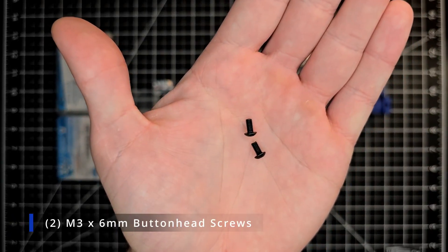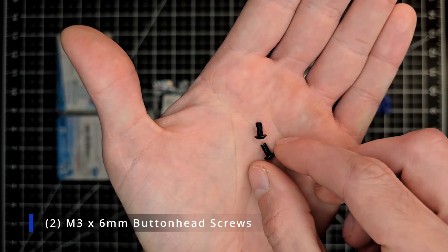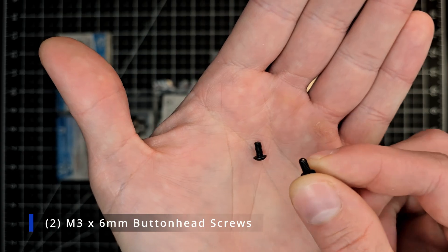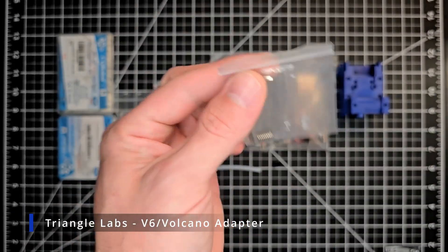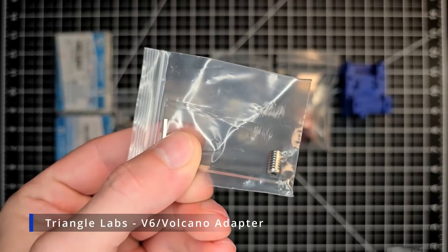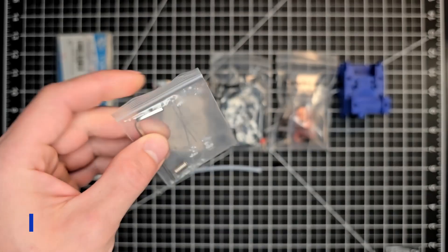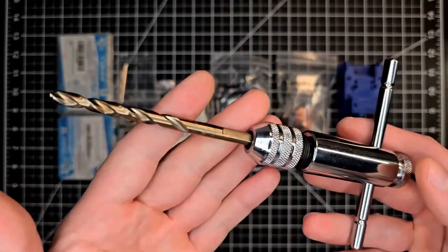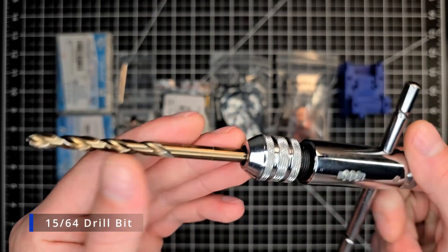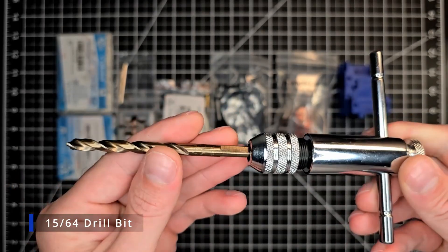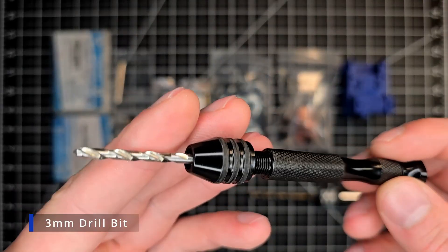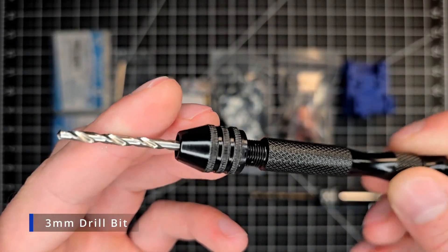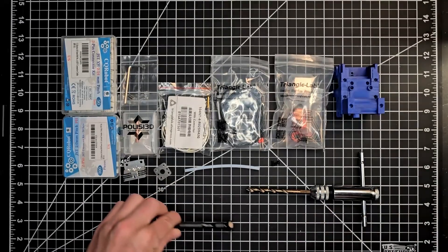Here we have two M3 by 6mm button head screws. These will go through the adapter plate and to the bottom of the K1 heatsink. A V6 nozzle adapter that will go into the heater block of the Dragon Ace. A 15/64th drill bit that will be used to open up the hole in the center of the Creality K1 heatsink. A 3mm drill bit which will be used to open up the holes in the adapter plate.